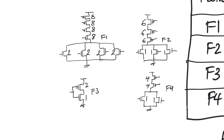So we have four CMOS gates: a four-input NOR, a three-input NOR, an inverter, and a two-input NOR. The sizing is shown on the gates.